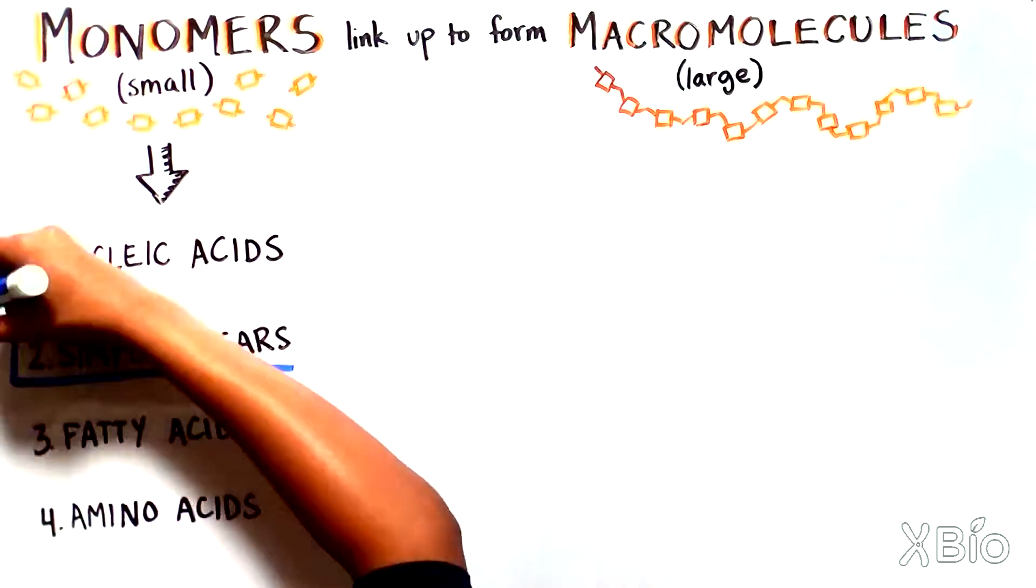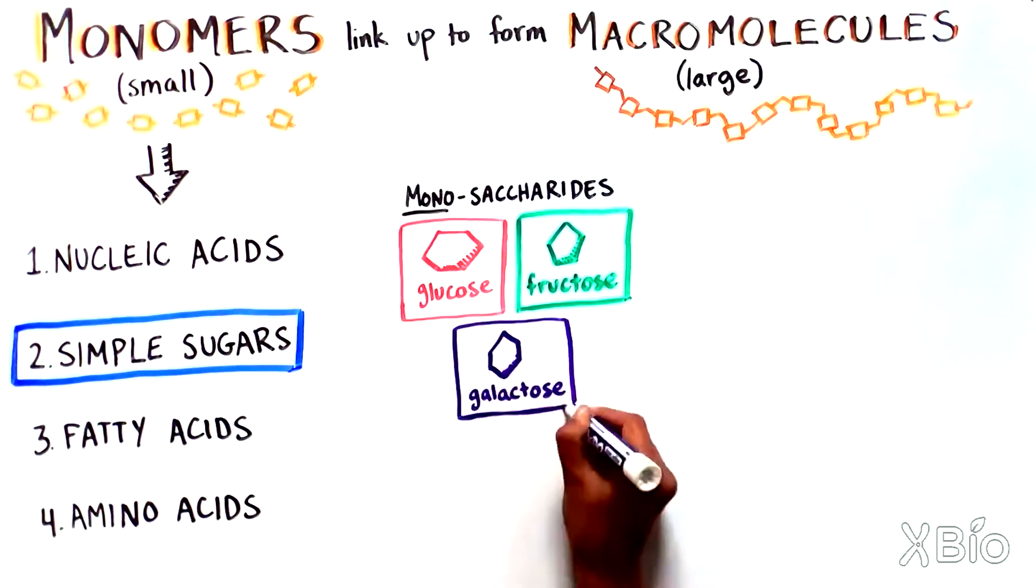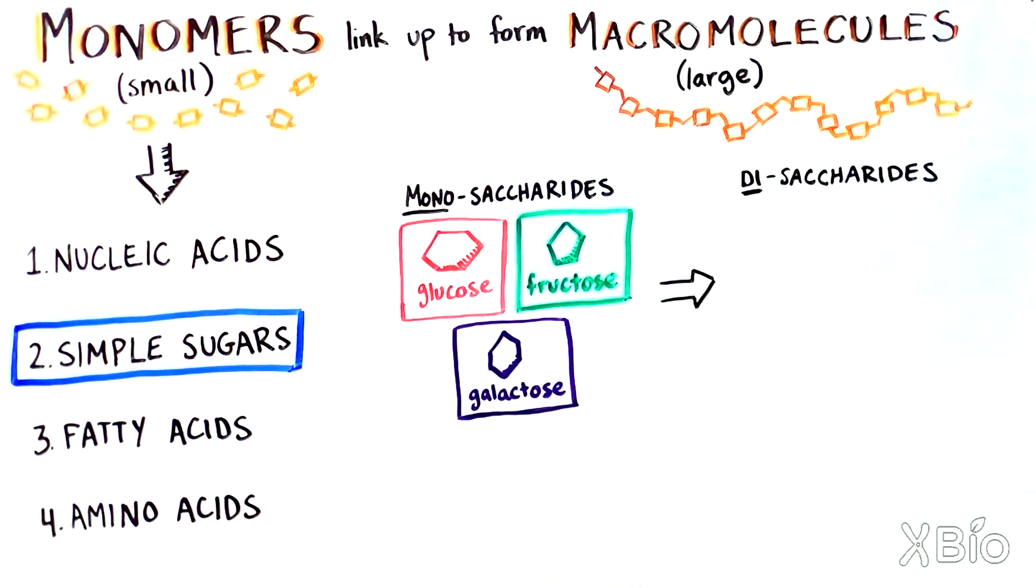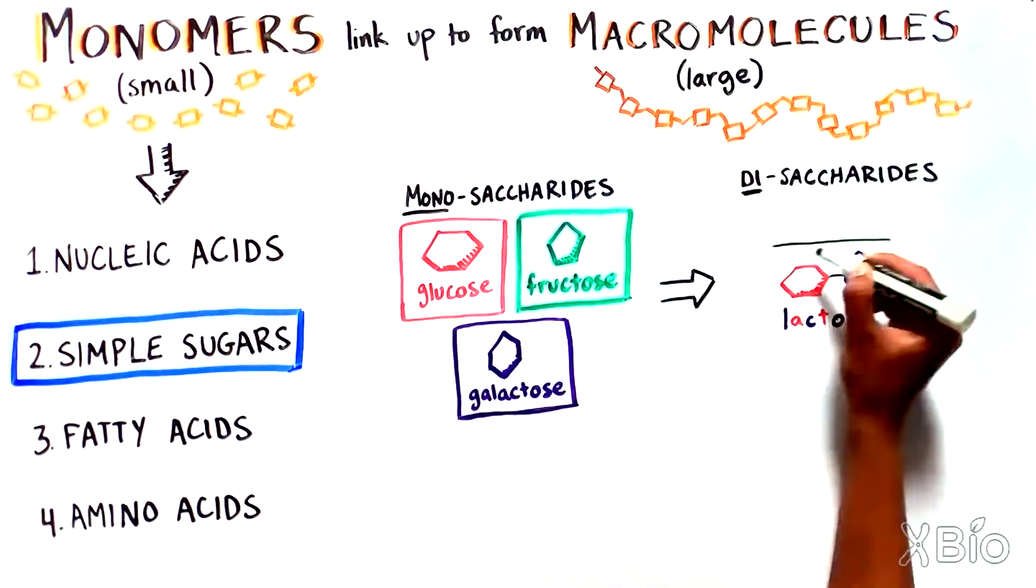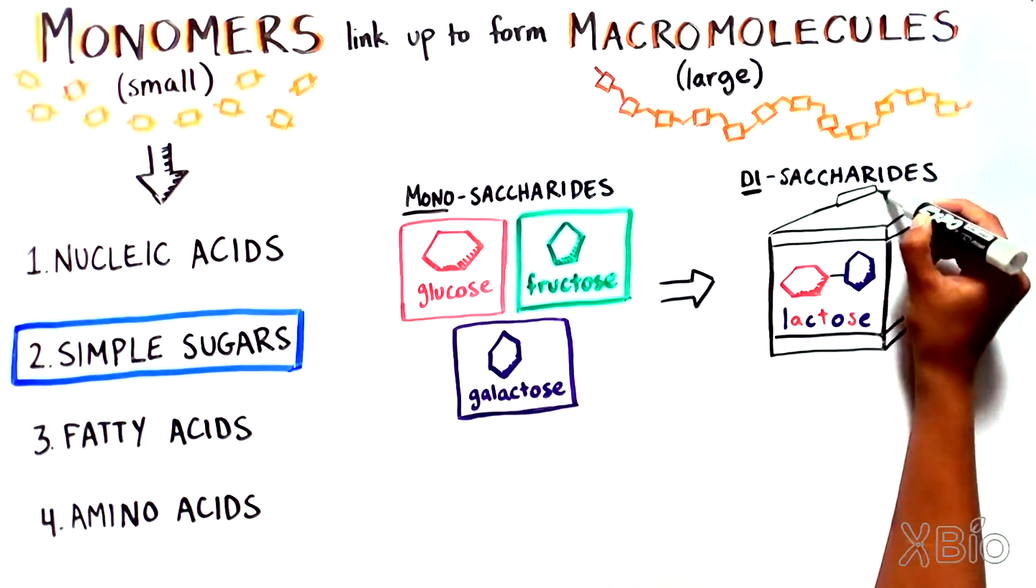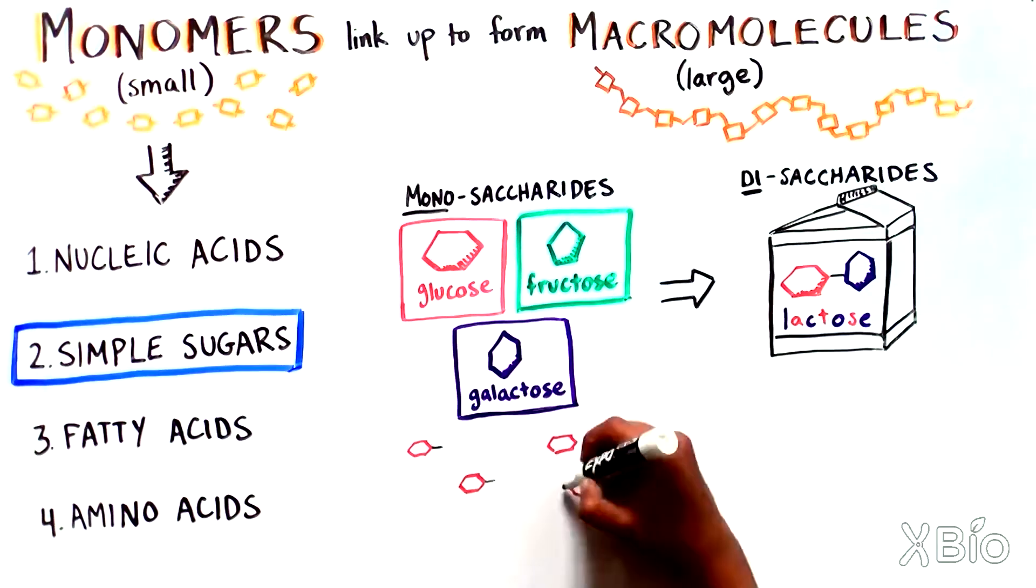Now, let's move on to the simple sugars. For example, glucose, fructose, and galactose. When two of these sugar monomers join up, they form what is called a disaccharide. One example of this is lactose, found in milk, which contains one glucose molecule and one galactose molecule.